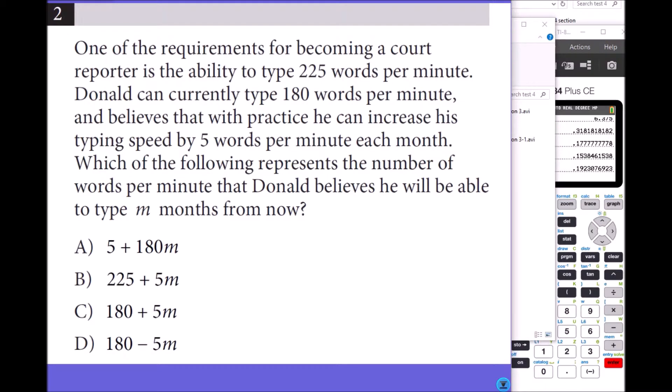One of the requirements for becoming a court reporter is the ability to type 225 words per minute. Donald can currently type 180 words per minute and believes that with practice he can increase his typing speed by 5 words per minute each month. Which of the following represents the number of words per minute Donald believes he will be able to type M months from now? Right now he can type 180 and he's adding 5 each month, so it is 5M plus 180. Answer A.